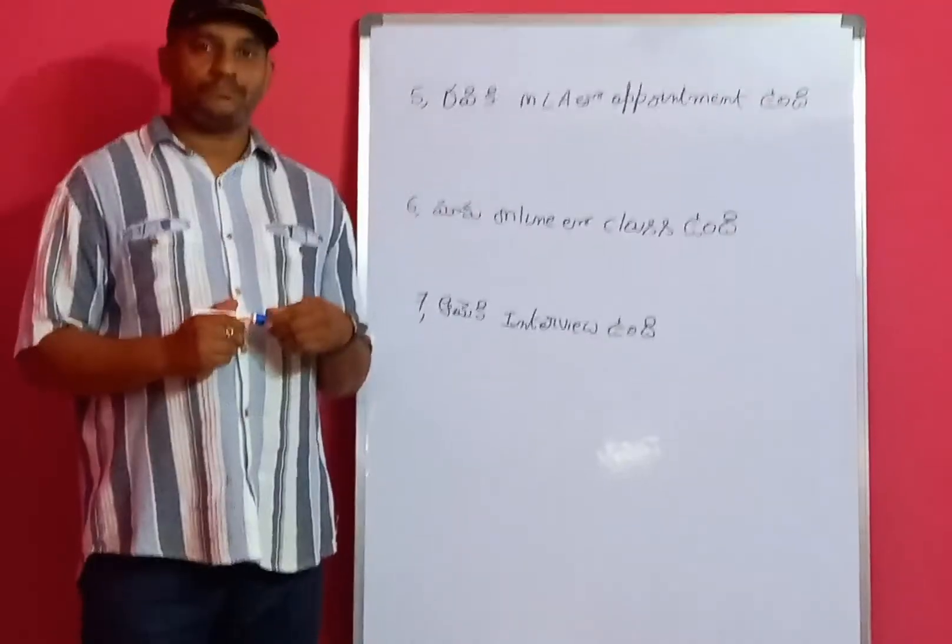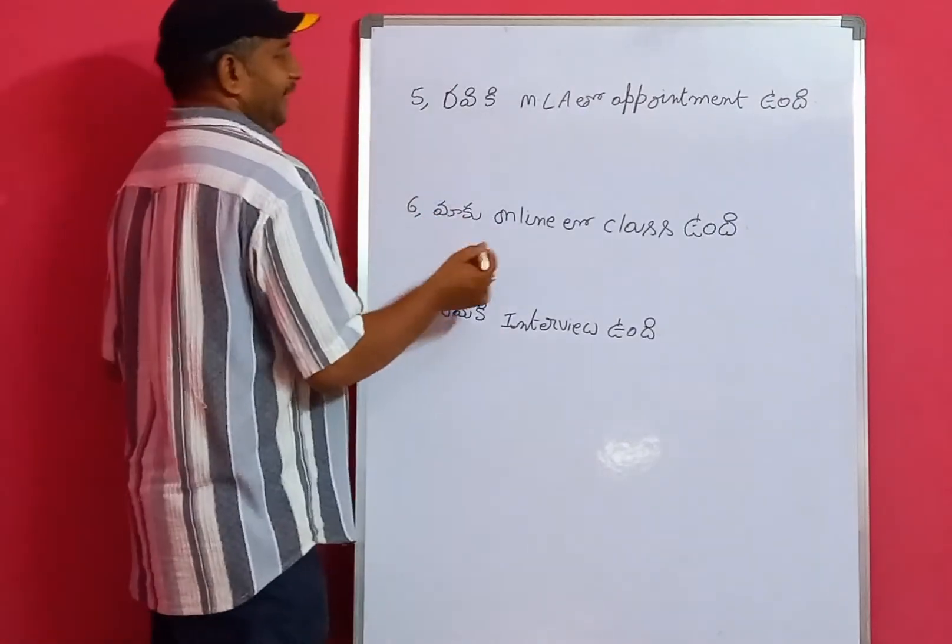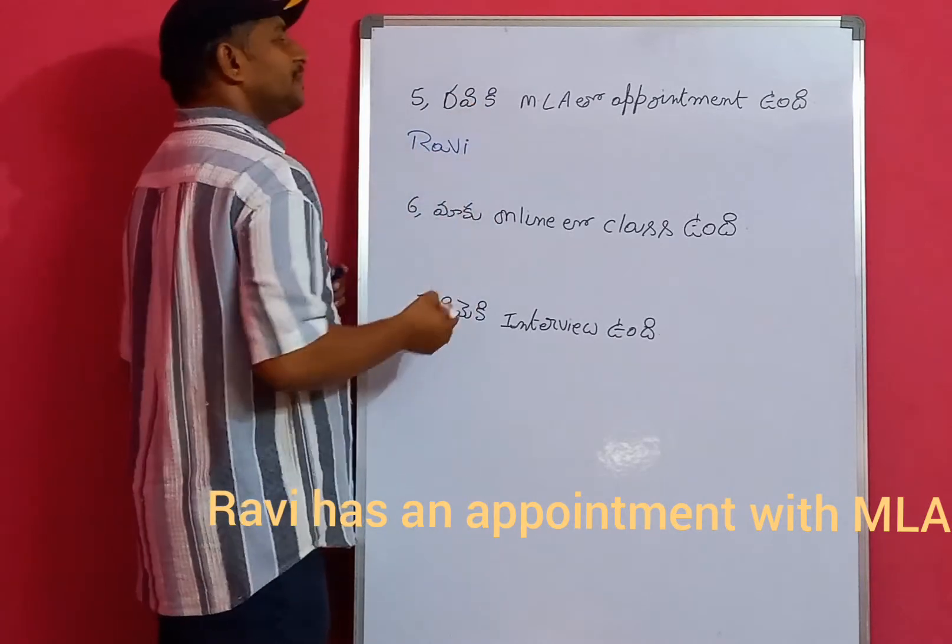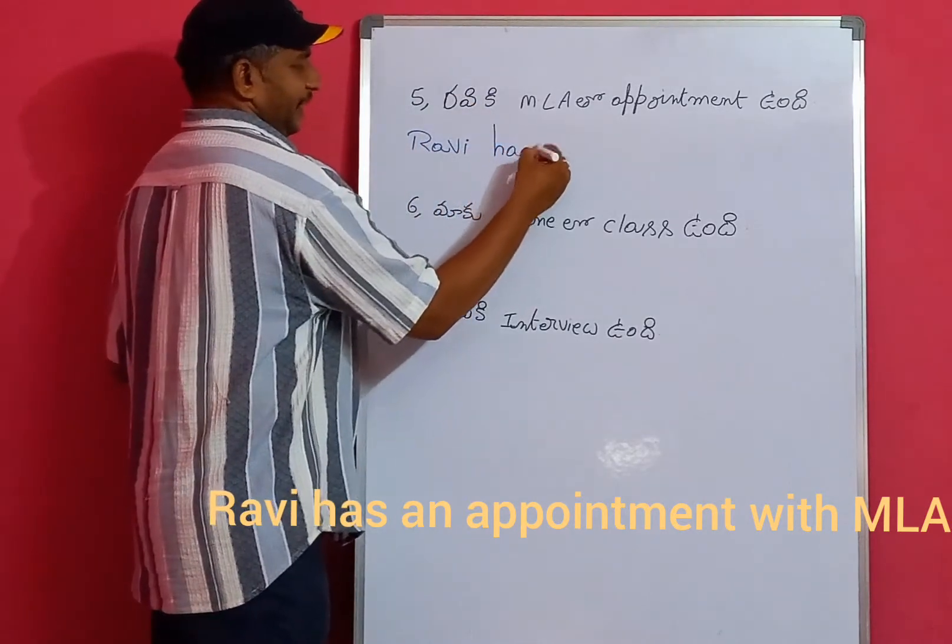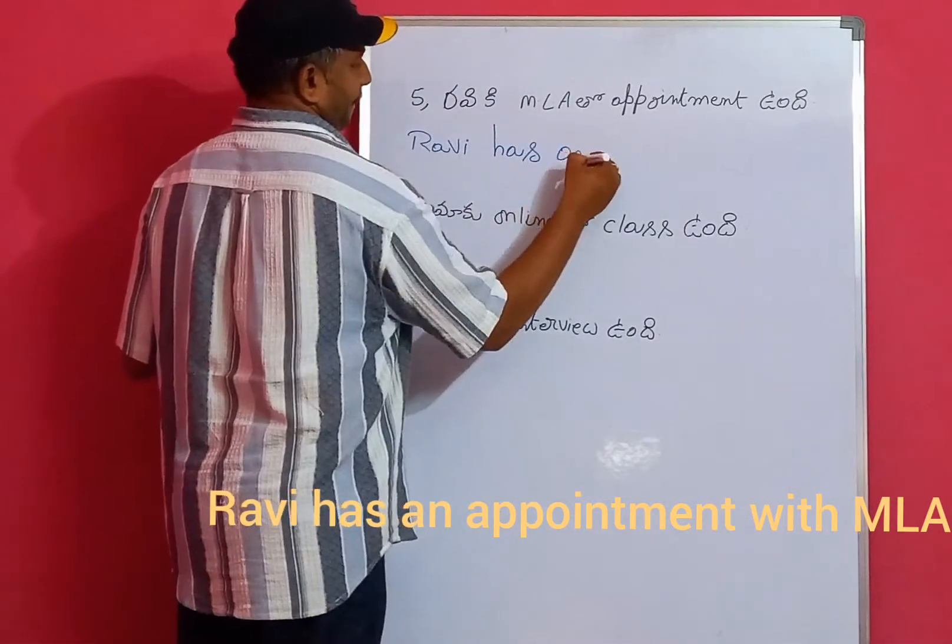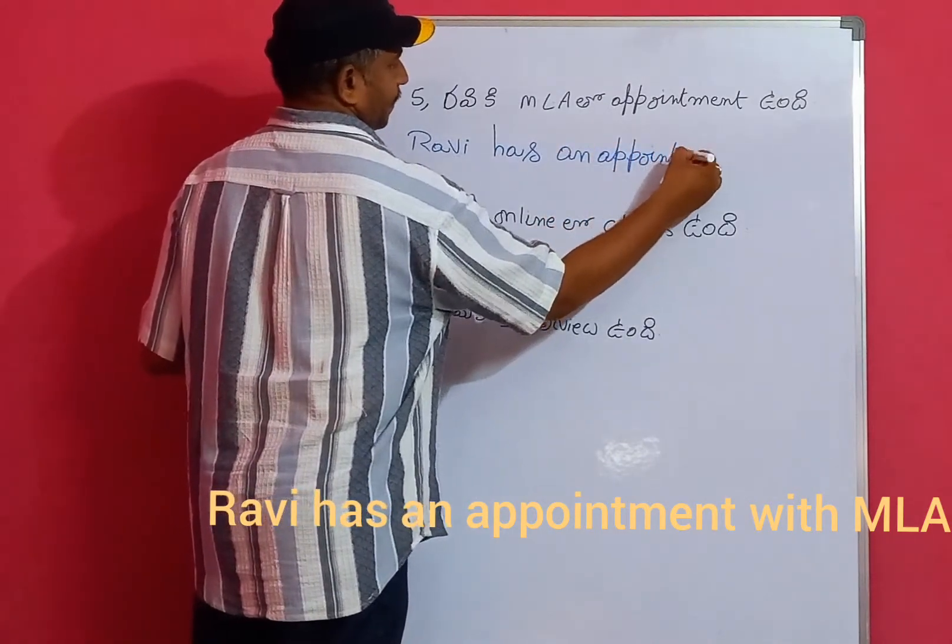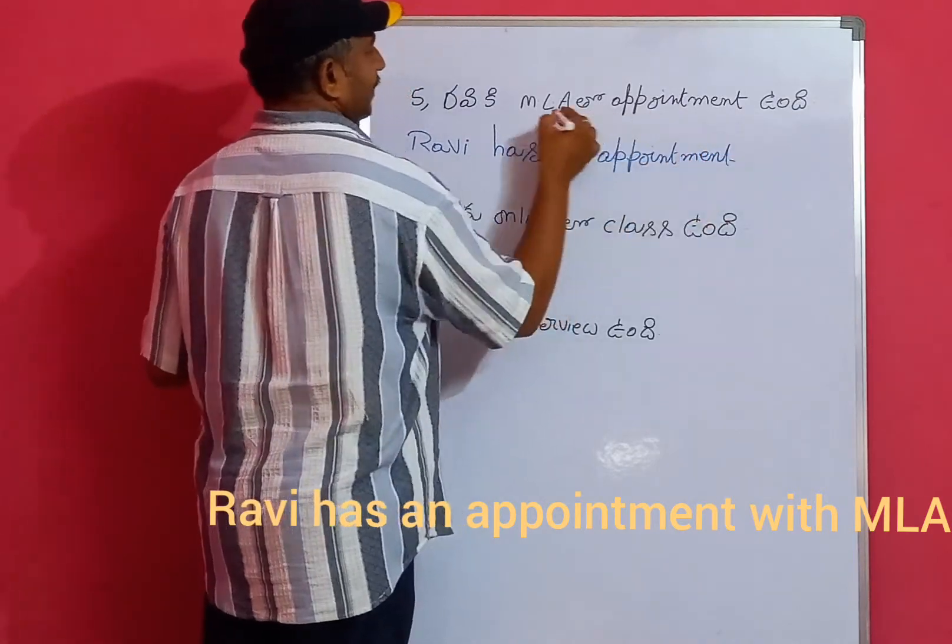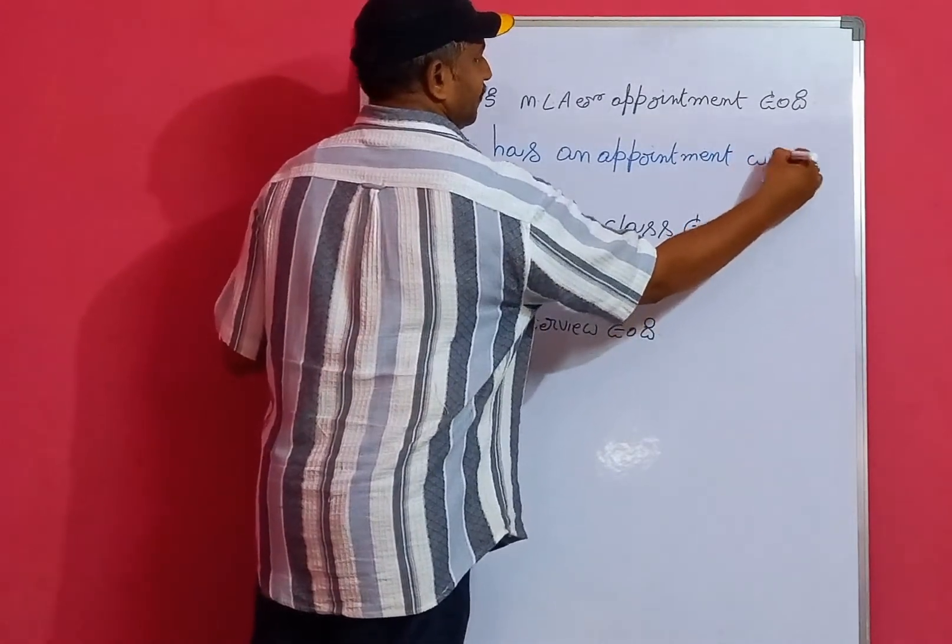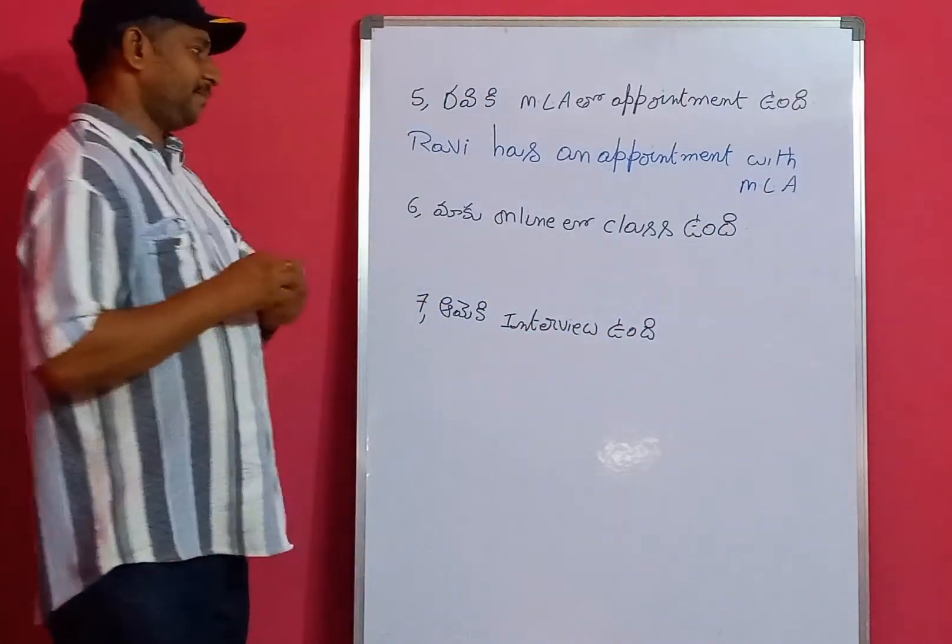We can look at some more examples. Ravi has an appointment. Ravi has an appointment with MLA.